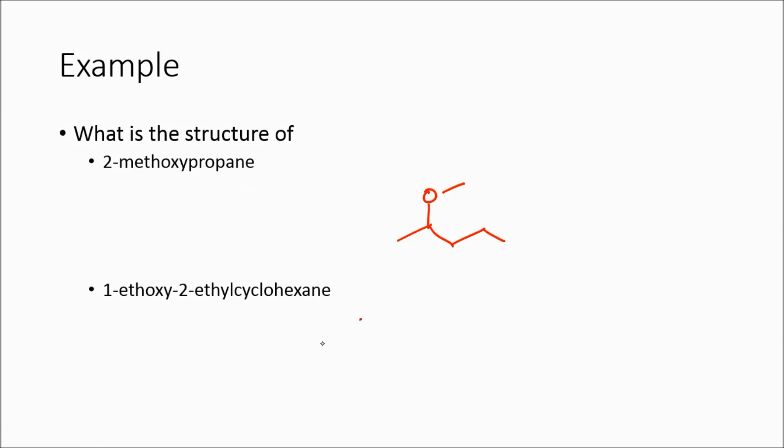Here, I have cyclohexane. So I draw a cyclohexane. In the one position, I have ethoxy. So if I set this as my one position, O, I've got an ethoxy group here. And then at the two position, I have an ethyl group. So one, two. This is 1-ethoxy-2-ethylcyclohexane.